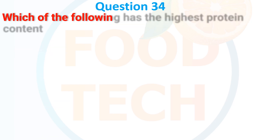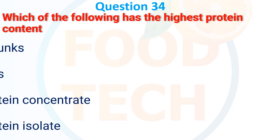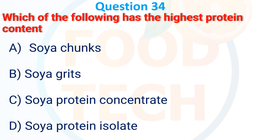Question 34. Which of the following has the highest protein content? A. Soya chunks. B. Soya grits. C. Soya protein concentrate. D. Soya protein isolate. The correct answer is A: soya chunks.